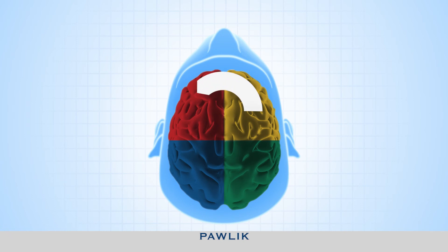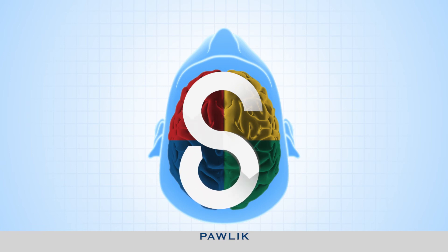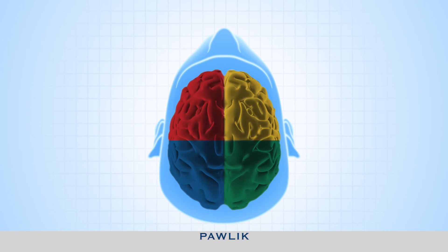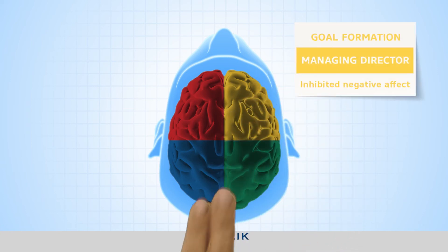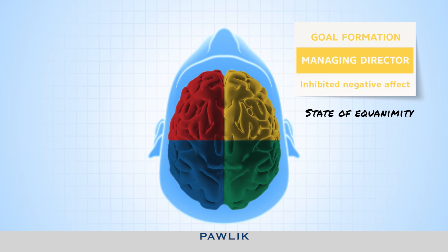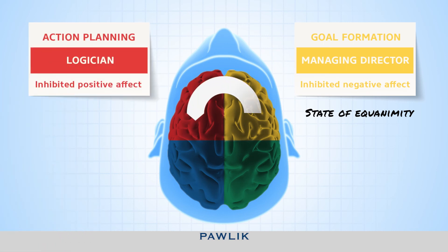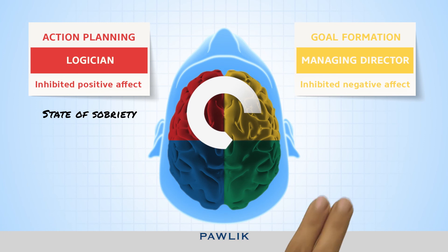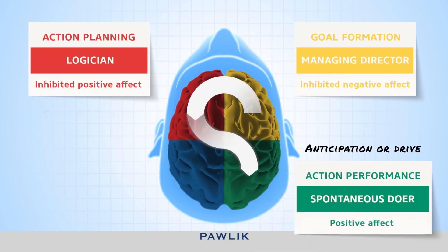A figure-eight symbol illustrates the way in which these cognitive systems should ideally interact with each other, showing which effects come into play at each stage of the process from goal formation to implementation. Goal formation and decision-making processes are handled by the managing director, best done in a state of equanimity — that is, an inhibited negative effect. Once the goal has been formed, concrete action steps need to be planned, best achieved in a state of sobriety — an inhibited positive effect. Once all preparatory measures have been taken and all steps considered, we can start putting our plans into action, releasing our sense of anticipation and drive — the positive effect.